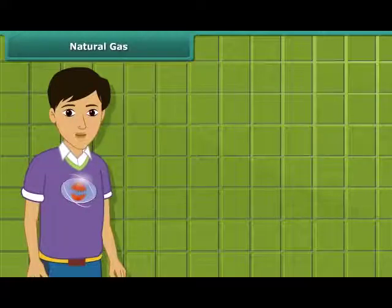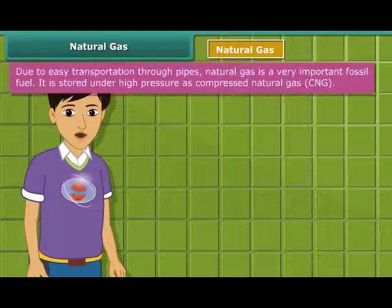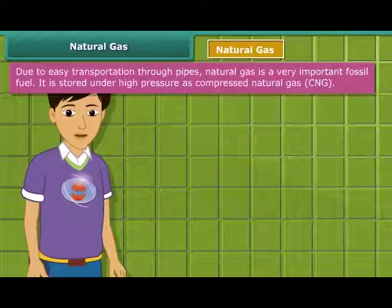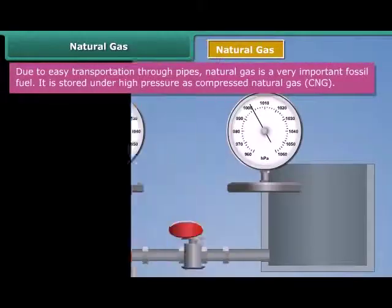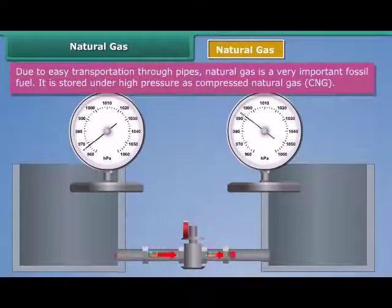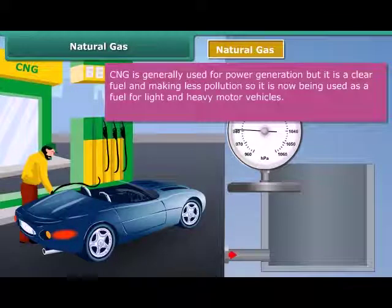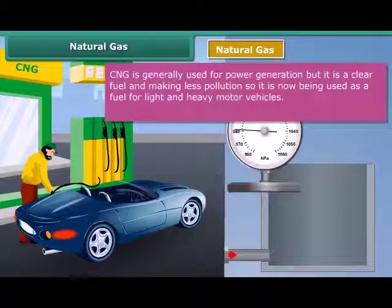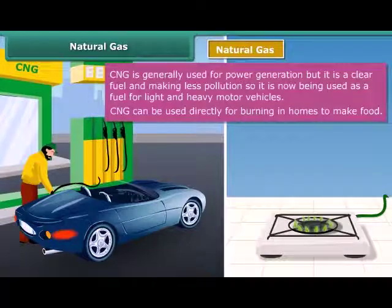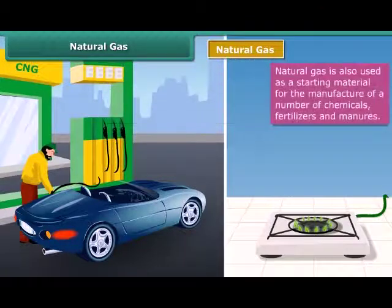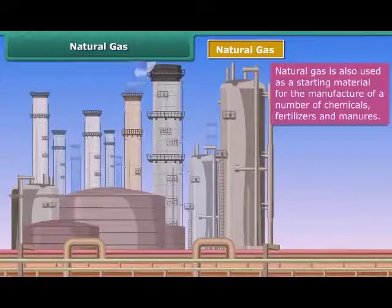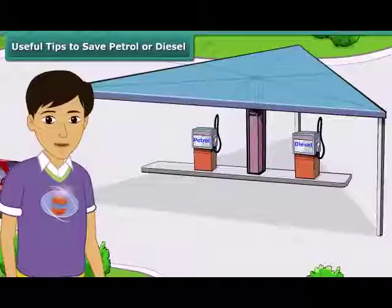Natural gas, also known as compressed natural gas or CNG, is stored under high pressure. CNG is generally used for power generation, but due to it being less polluting, it is also being used as a fuel for vehicles and for cooking purposes. Natural gas is also used as a base material for the manufacture of a number of chemicals and fertilizers.